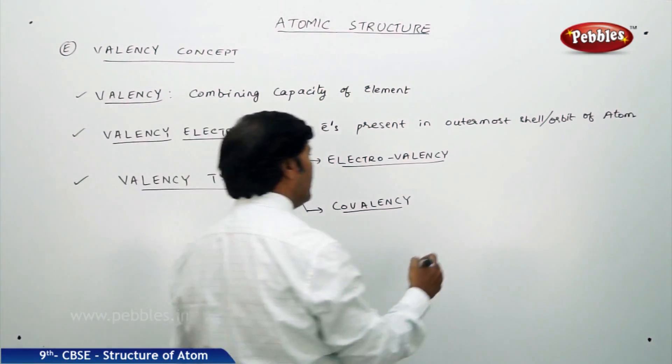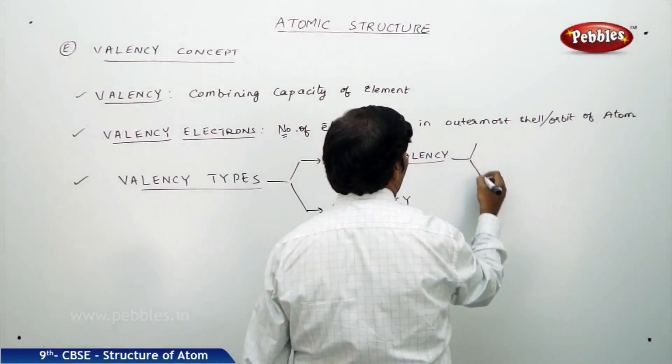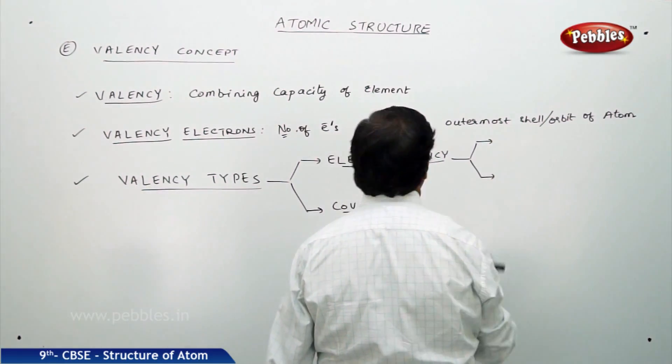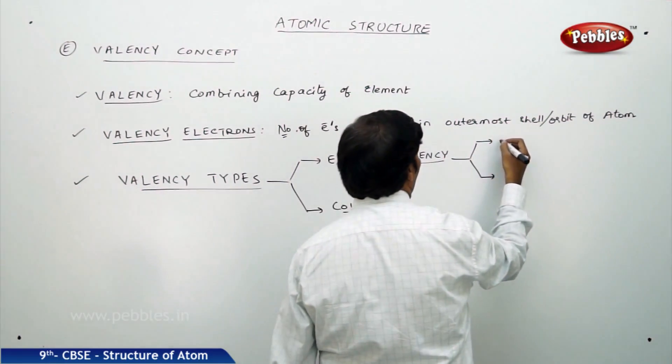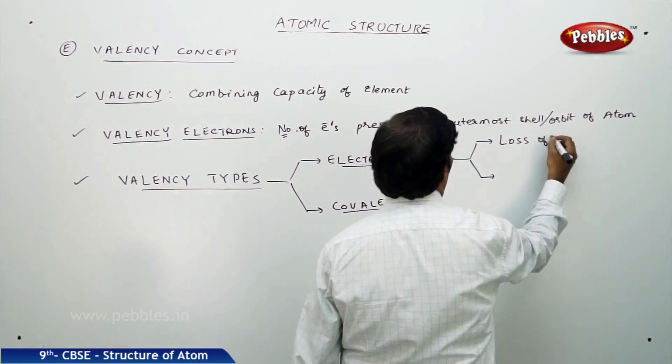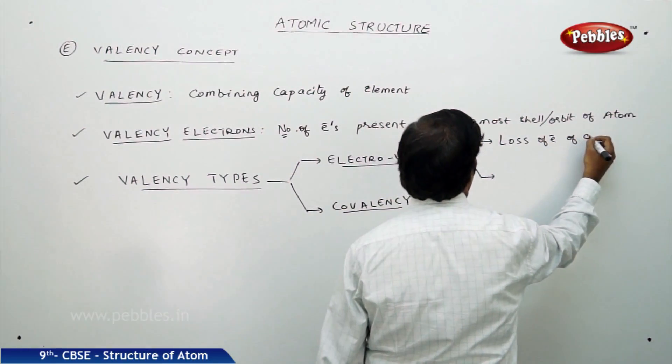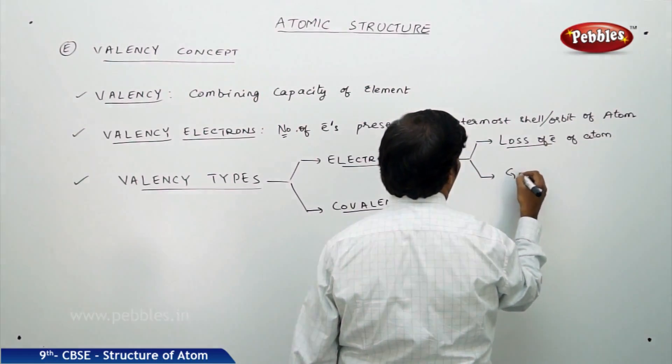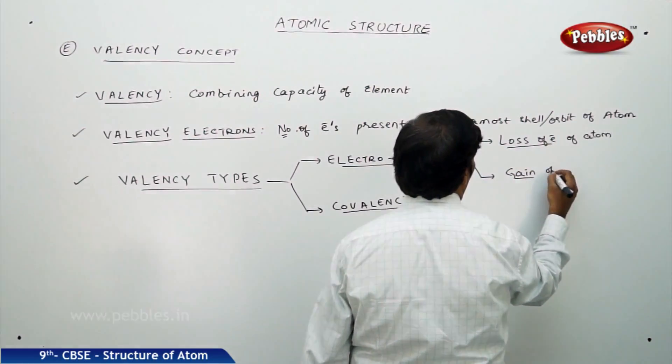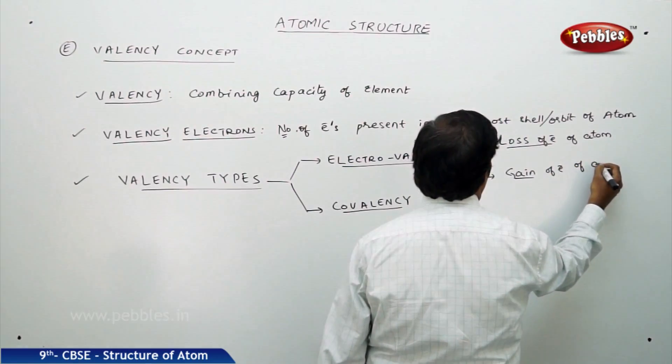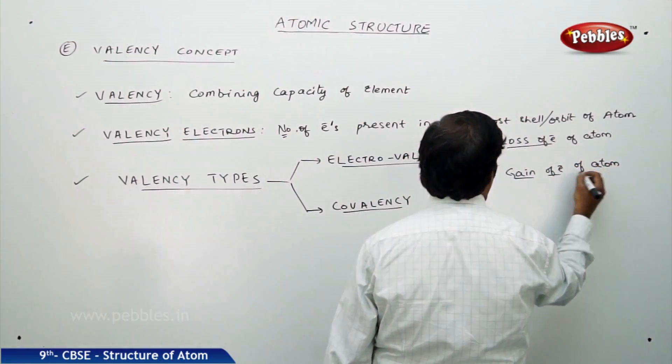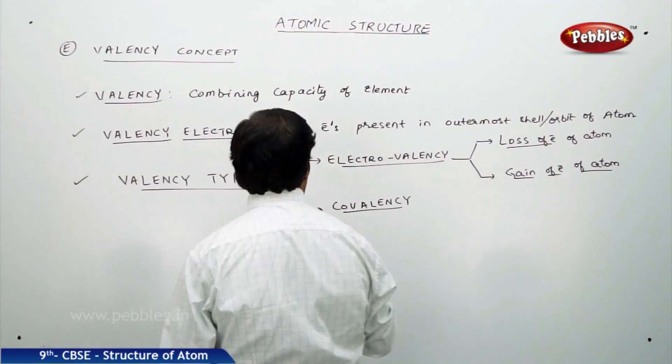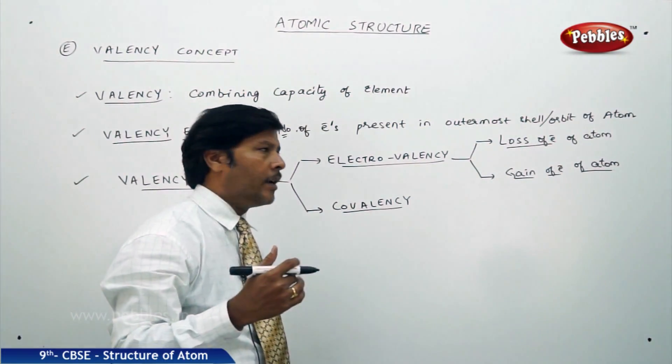If you go for electrovalency, electrovalency can be obtained in two methods. Electrovalency can be obtained by loss of electron of an atom and also sometimes gain of electron of an atom. So whatever may be the case, the electrovalency is of both types.